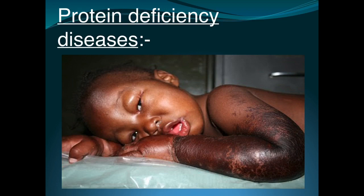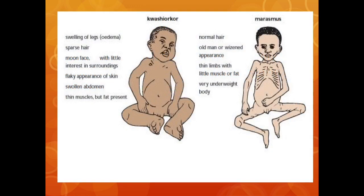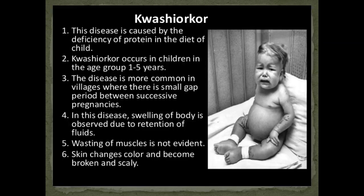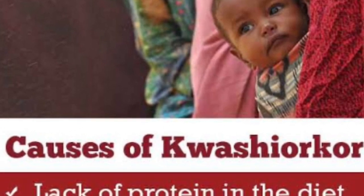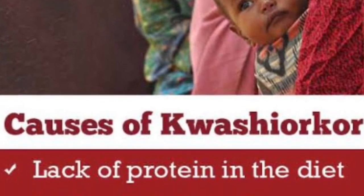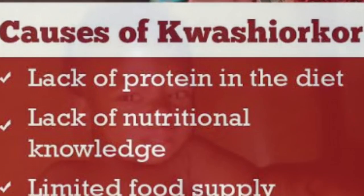Protein energy malnutrition is commonly seen in infants and growing children up to five years of age, due to deficiency of proteins and calories over a longer period of time. Kwashiorkor is a disease caused by deficiency of protein in the diet of children, mainly in the age group of 1 to 5 years.